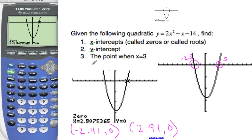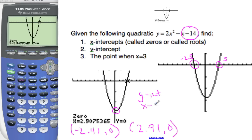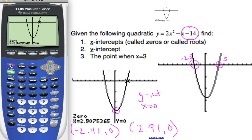Now my y-intercept. To find my y-intercept, I know that x must be 0. So if I go over to my calculator — second trace, value — I can just ask it when x is 0, find the value. And indeed, it is 14. So I get 14 from there.